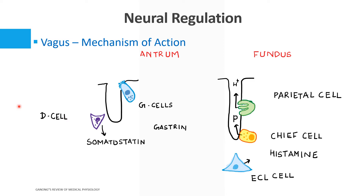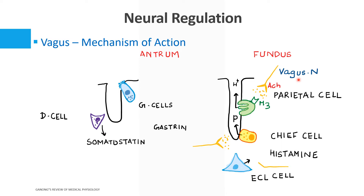When the vagus nerve is stimulated, it releases the neurotransmitter acetylcholine. Acetylcholine acts on all three cells: the parietal cells via M3 receptors to increase H+ secretion, on the chief cells to increase pepsinogen secretion, and on the enterochromaffin-like cells to increase histamine production. Histamine in turn further stimulates the chief cells and parietal cells, resulting in increased H+, pepsinogen, and histamine.